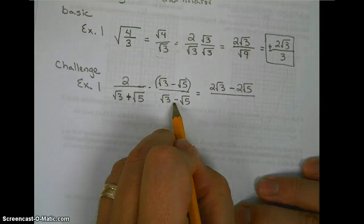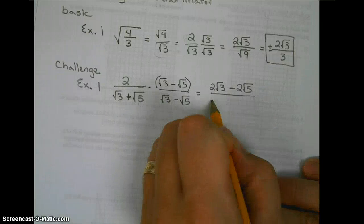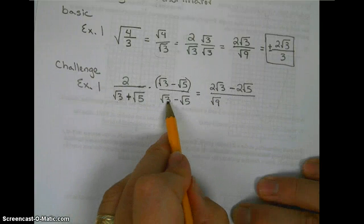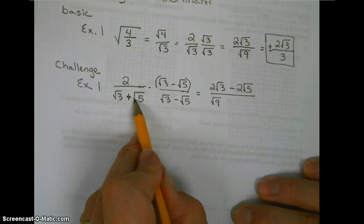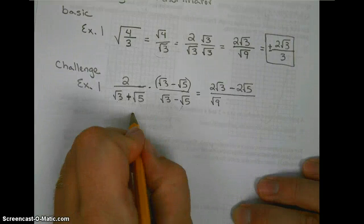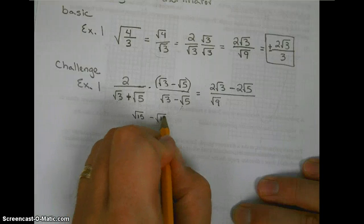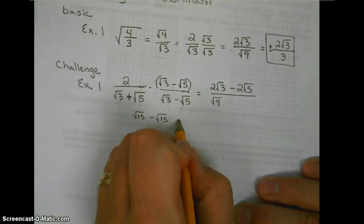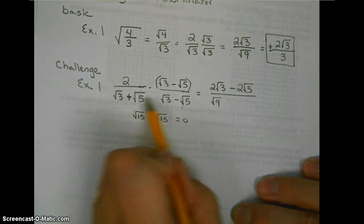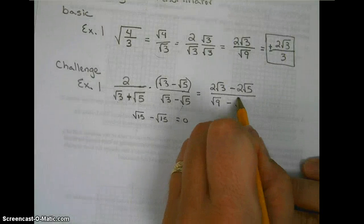Square root of 3 times the square root of 3, square root of 9. Inner: square root of 15. Outer: negative square root of 15. Well, the square root of 15 minus the square root of 15 is 0, so the inner and the outer cancel. The last term: square root of 5 times negative square root of 5 is negative square root of 25.